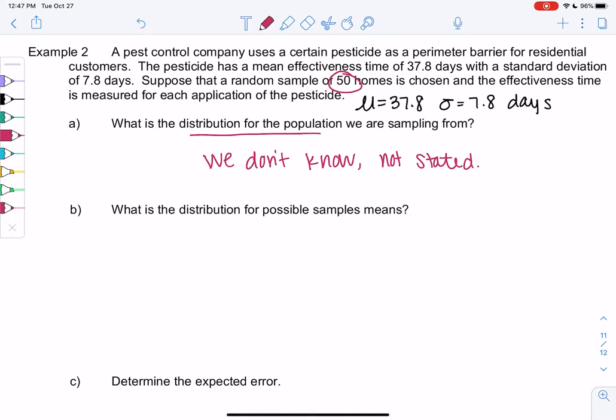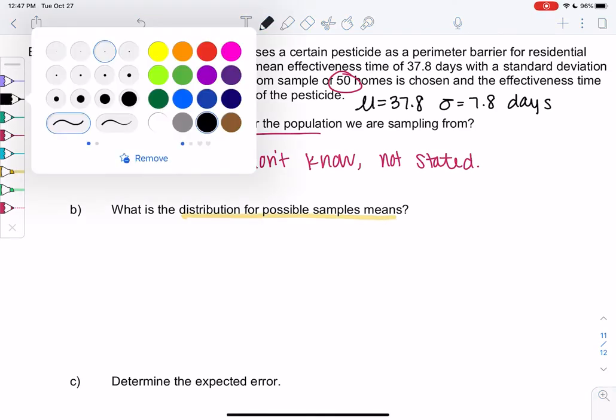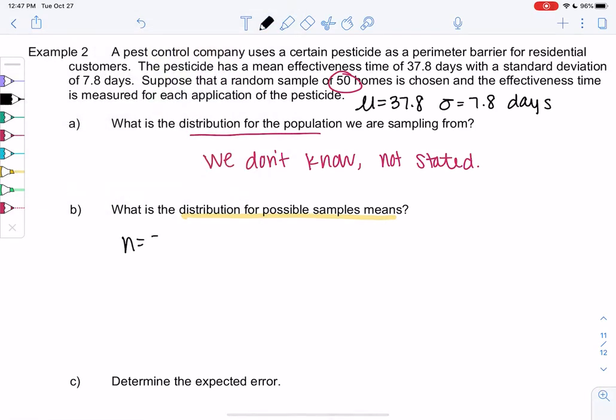But we do know the distribution of the sample means because my sample size is 50, which is at least 30. The averages, the sample means x̄, is normal. That's from the Central Limit Theorem, which I'll abbreviate CLT.